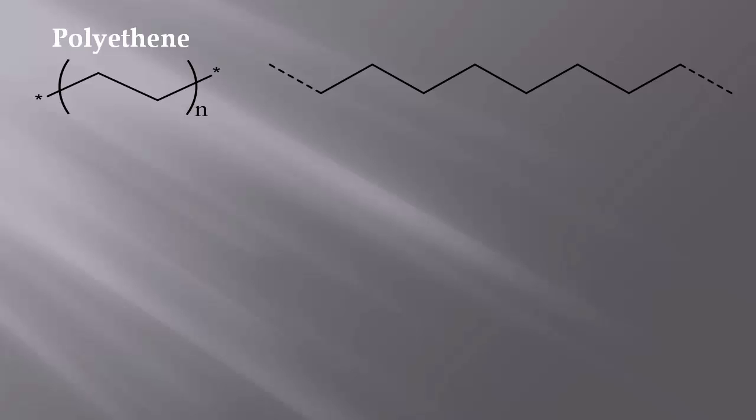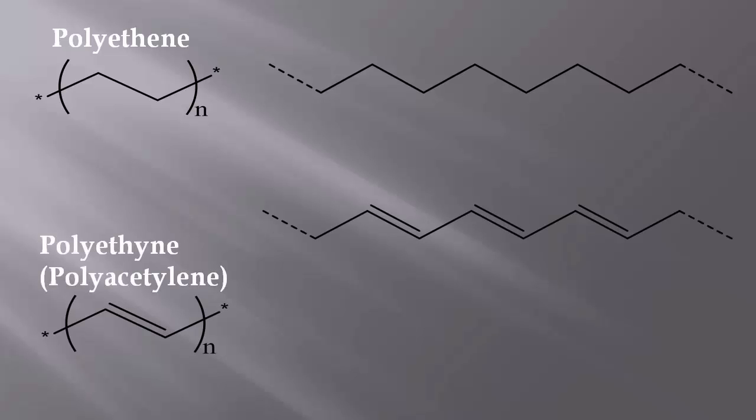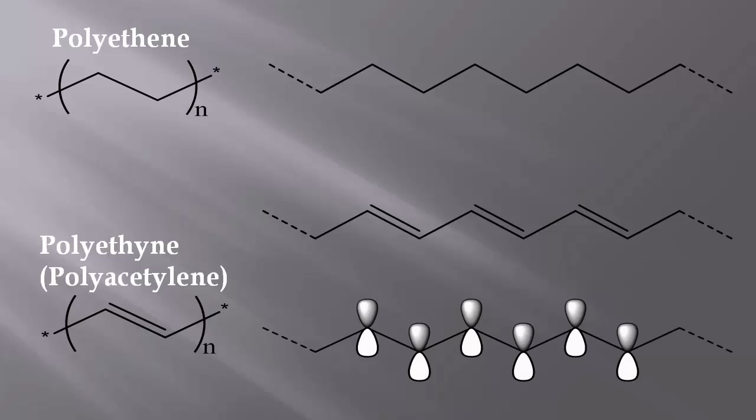However, conjugated polymers have backbone chains of alternating double and single bonds, with overlapping p orbitals creating a system of delocalized electrons.